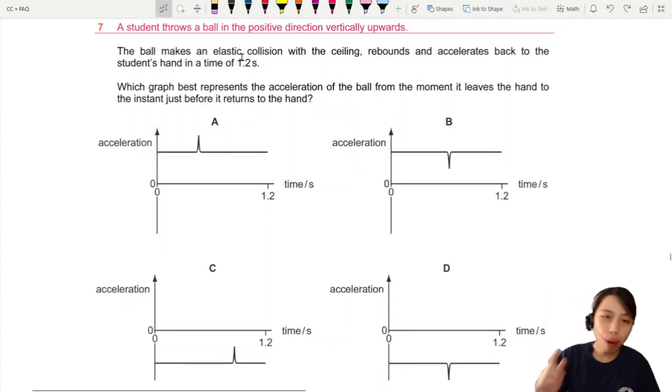A student throws a ball in the positive direction vertically upwards. So positive is up. Keep that in mind. The ball makes an elastic collision with the ceiling, rebounds and accelerates back to the student's hand in 1.2 seconds.